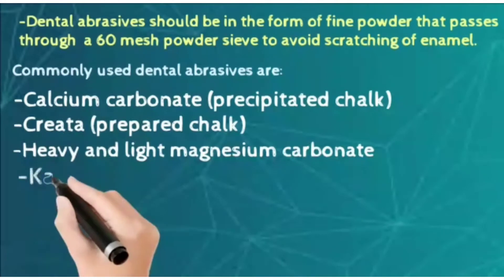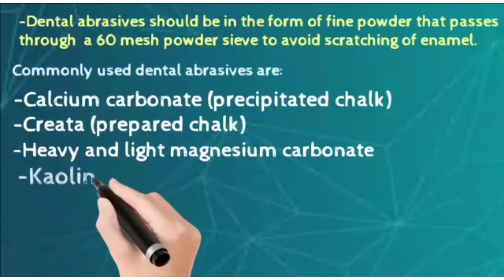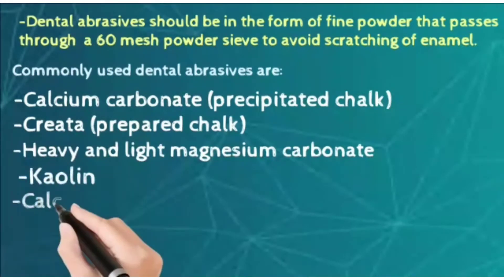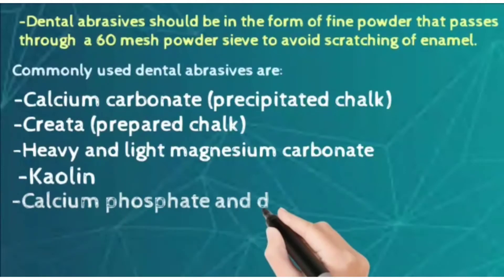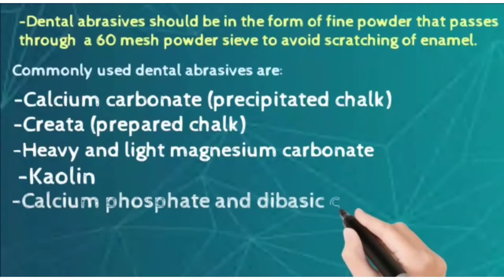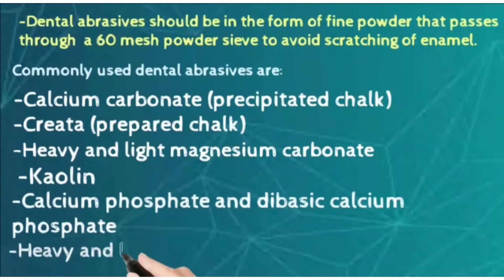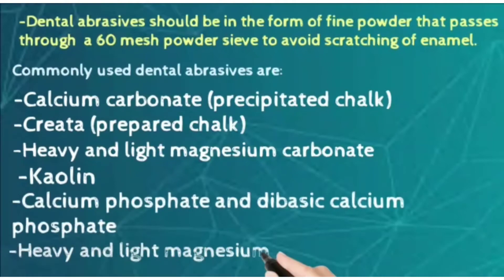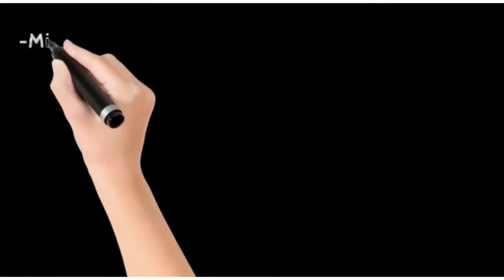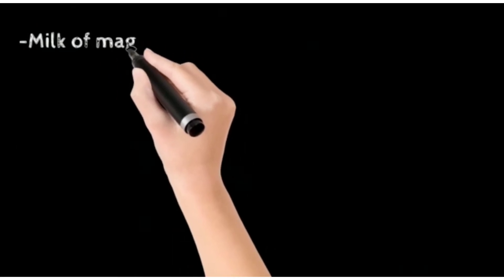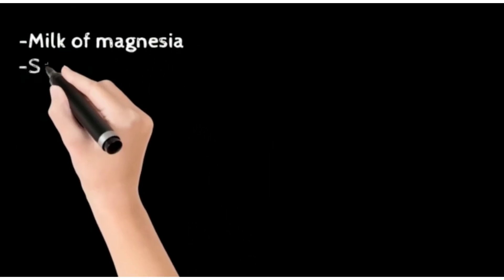Then we have kaolin, and calcium phosphate is also used. Dibasic calcium phosphate is also used as a dental abrasive. Heavy and light magnesium oxide is also there, and milk of magnesia is one of the common abrasives.